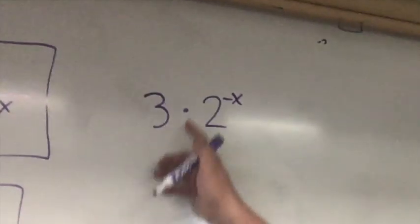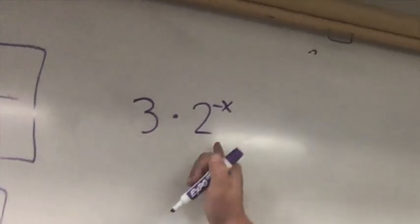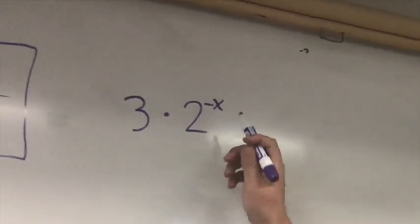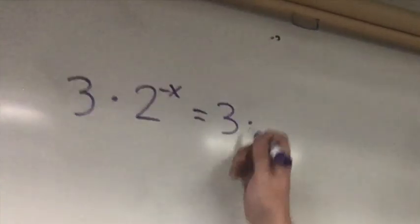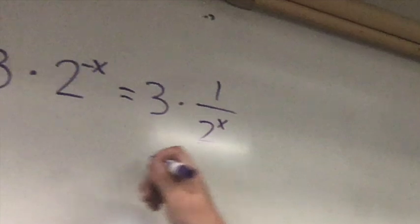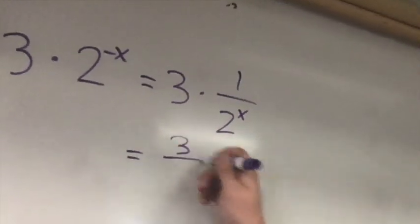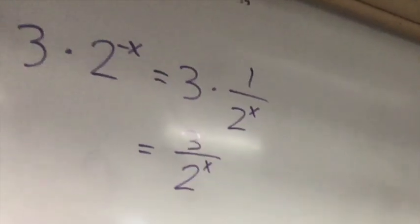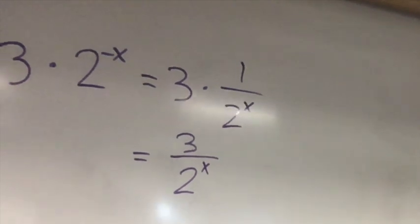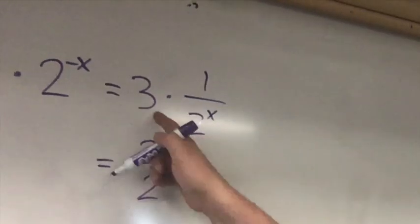So the 3 doesn't have a negative exponent—it doesn't care about 2's problems. So this would just become 3 times 1 over 2 to the x, which would be equivalent to 3 over 2 to the x. All of these three are different ways of writing the same thing.